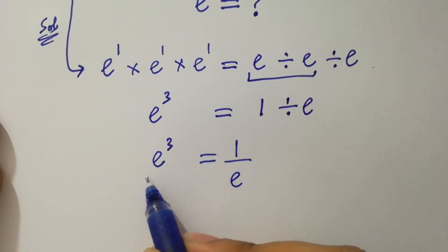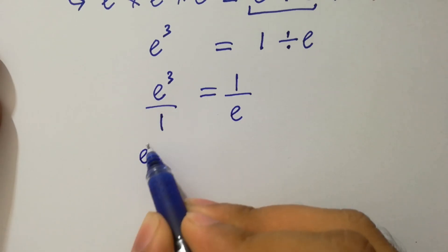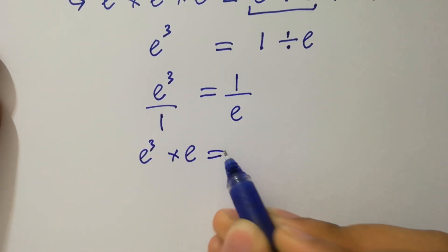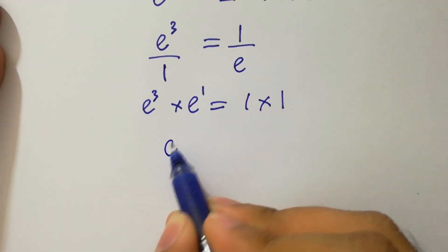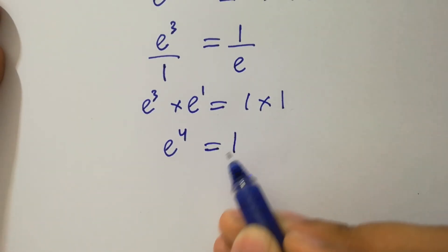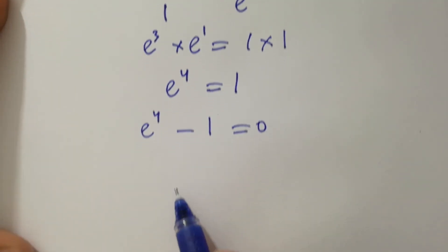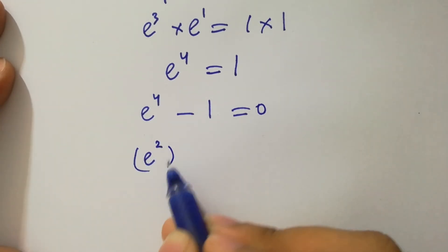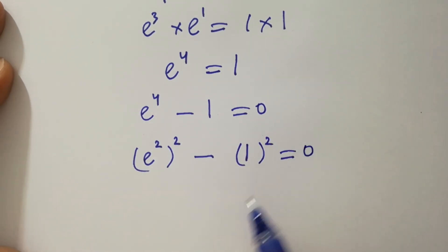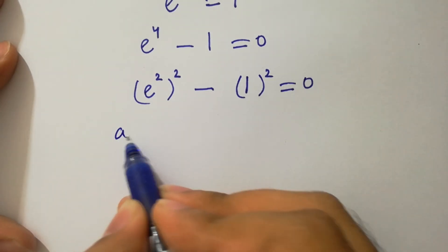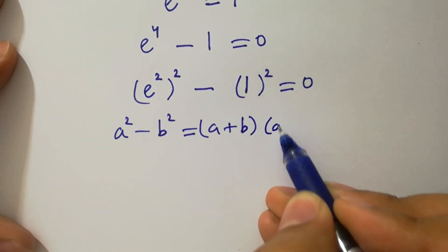This is the same as, by cross multiplication, e cubed times e equals 1 times 1. Since this is to the power 1, by adding powers, 3 plus 1 is 4, we get e to the power 4 equals 1. So e to the power 4 minus 1 equals 0, which is the same as (e squared) squared minus 1 squared equals 0. We apply the formula a squared minus b squared equals (a plus b)(a minus b).